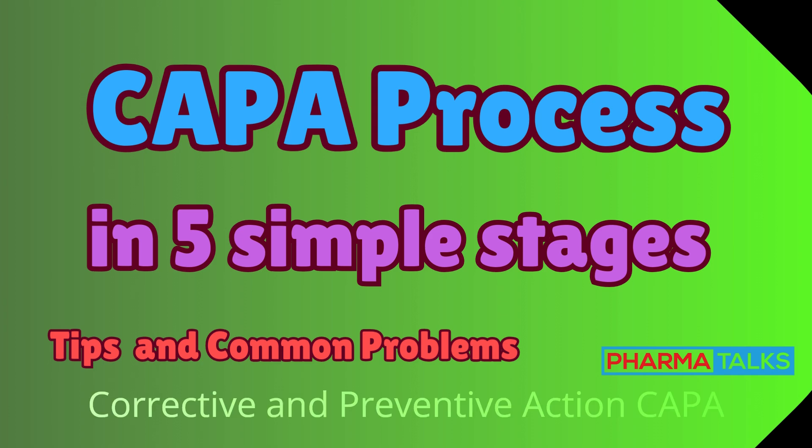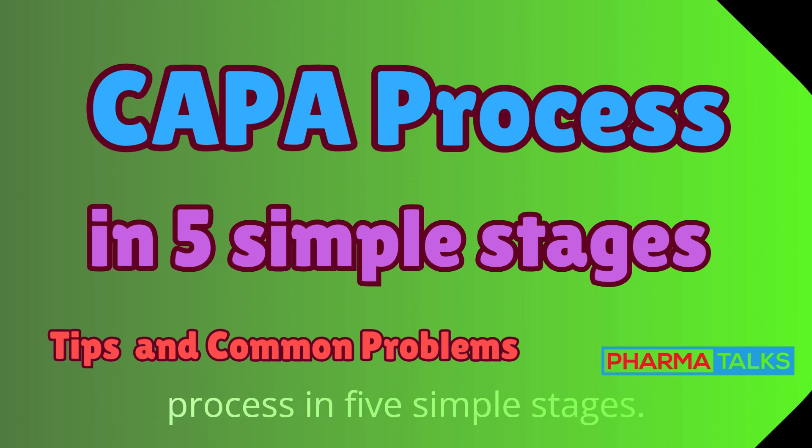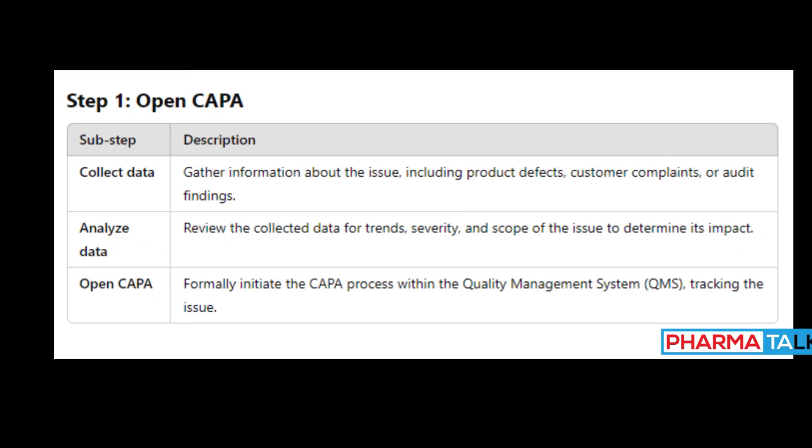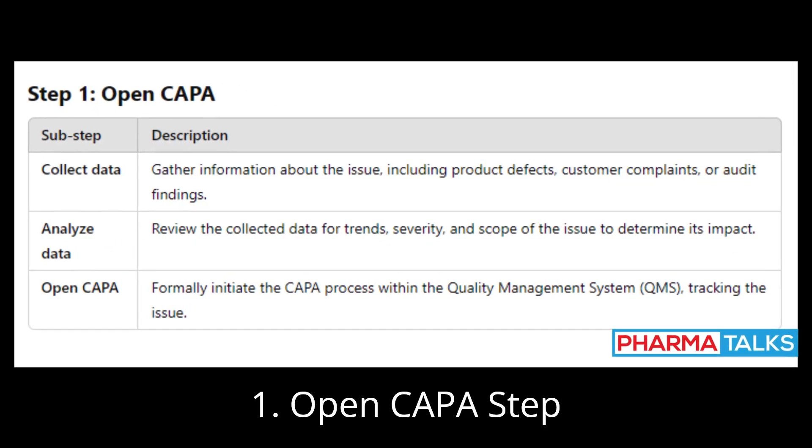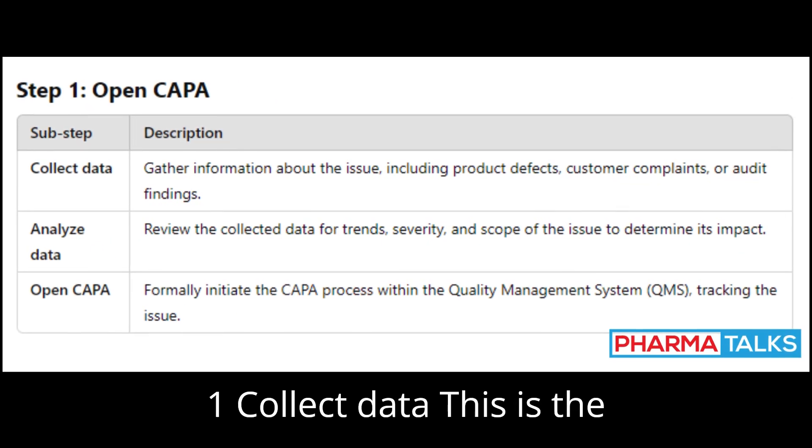Corrective and Preventive Action — CAPA Process in 5 Simple Stages. Stage 1: Open CAPA.